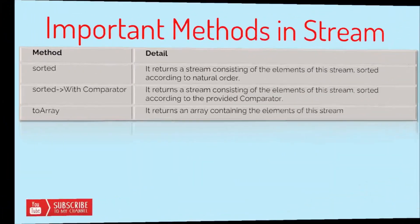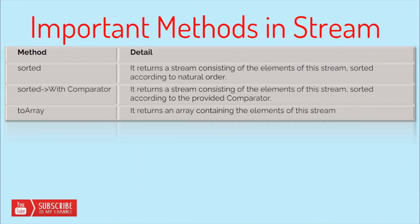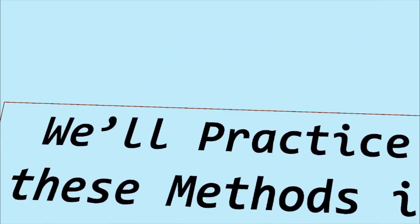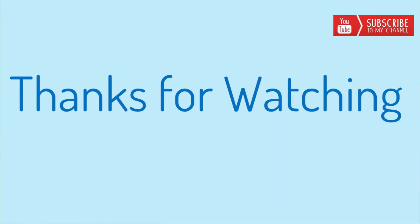sorted has two forms — it returns a stream of elements in sorted order. If no comparator is provided, natural ordering is used; if a comparator is provided, sorting is done based on that comparator. The last method is toArray, which returns an array containing the elements of the stream. These were the important intermediate and terminal methods in Stream API. In the next video, we will see almost all of these methods in practice. Thanks for watching, keep learning!